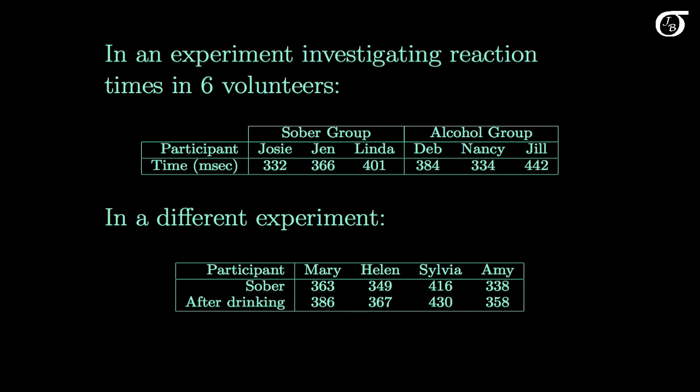In an experiment investigating reaction times in six volunteers, volunteers were randomly assigned to one of two groups. One group received alcohol and another group stayed sober, and then their reaction times in milliseconds were measured. We could consider these two groups to be, in a sense, independent samples, so methods of analysis based on independent samples would be appropriate here. Something like the pooled variance t procedure would be an option.